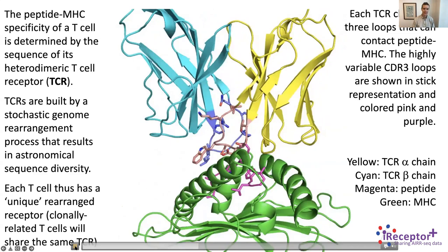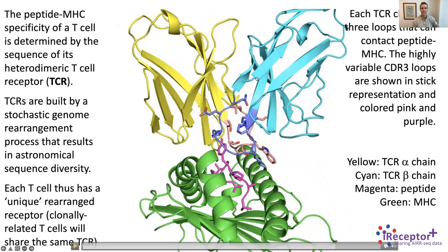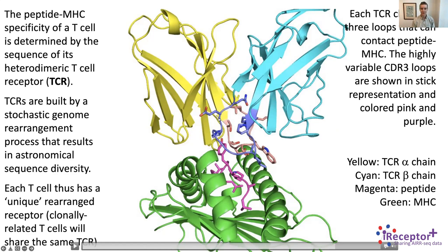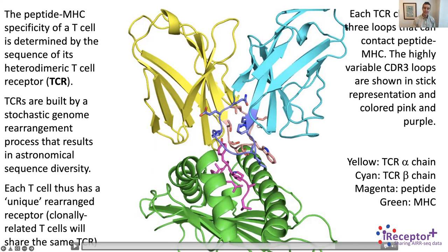If we trace the beta chain through the structure, the bulk of the variable domain is contributed by the V gene — from the N-terminus all the way down to roughly where trimming ends. The CDR3 loop, depending on how we define its start and stop, makes many of the contacts to the peptide. The J gene contributes the second half or so of the CDR3 and then leads back up into the constant domain. So the CDR3 is something many people focus on, but the bulk of the variable domain is actually contributed by the V gene.